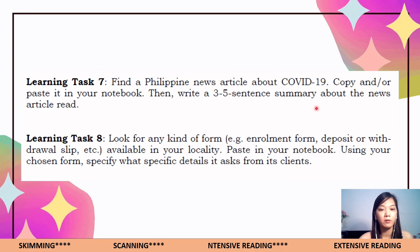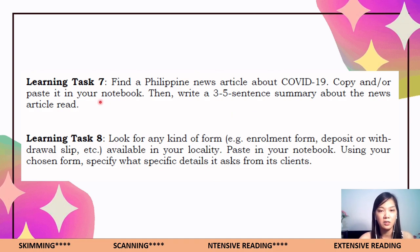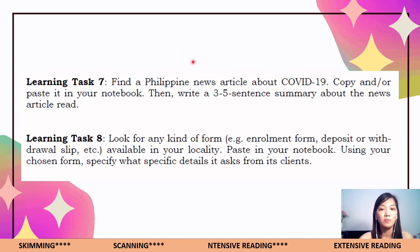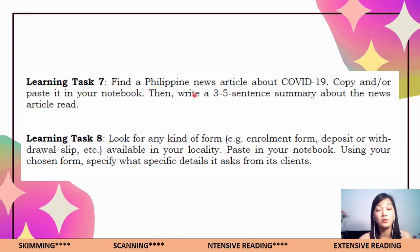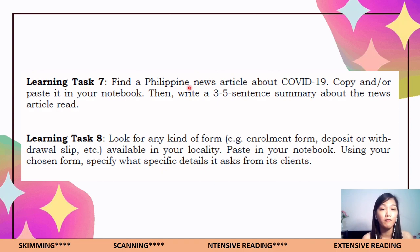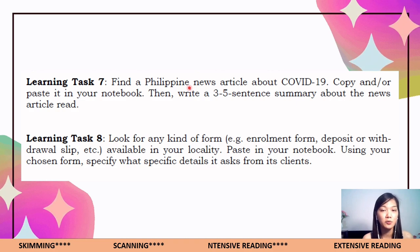For Learning Task Number Seven: find a Philippine news article about COVID-19, copy or paste it in your notebook, then write a three to five sentence summary about the news article. The article should be from a Philippine setting, not about COVID-19 in another country. You can find a news article online and copy it, or cut out a specific article from a newspaper and paste it in your notebook or booklet. Read the article and construct your three to five sentence summary.